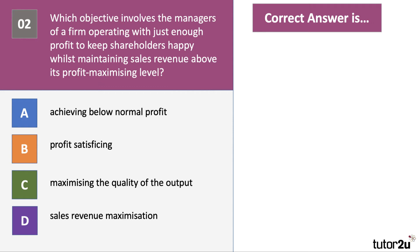Question number two: which objective involves the managers of a firm operating with just enough profit to keep shareholders happy, whilst maintaining sales revenue above the profit maximising level? The correct answer is B — profit satisficing. It's a departure from profit maximisation, aiming to make a satisfactory and sufficient return for shareholders but also achieving higher revenues for the managers.